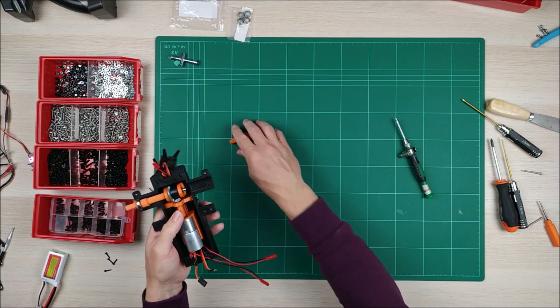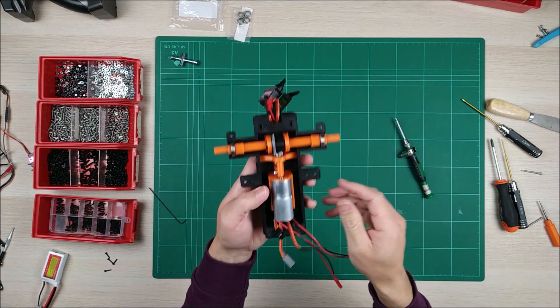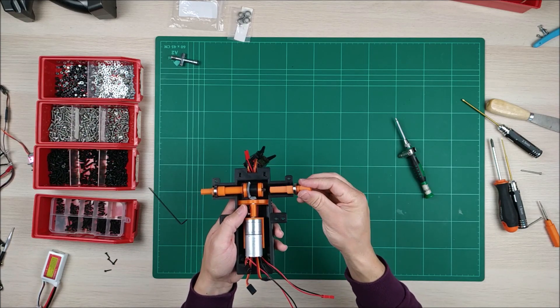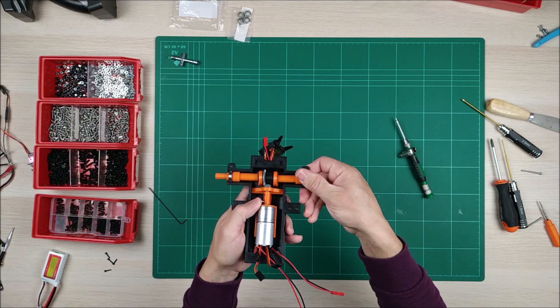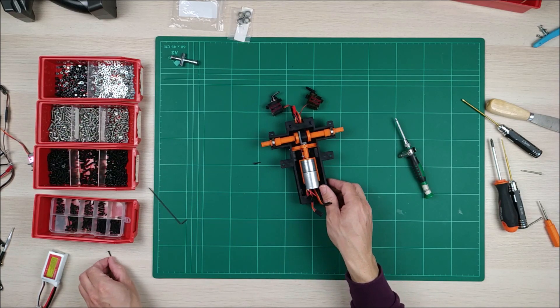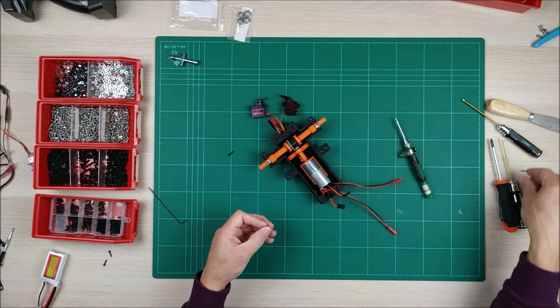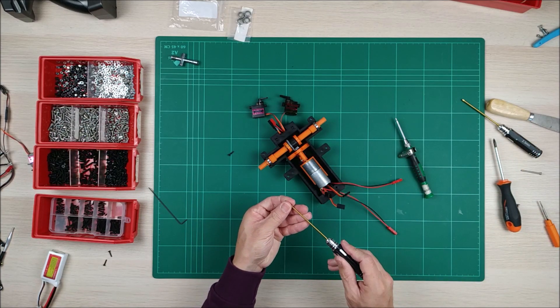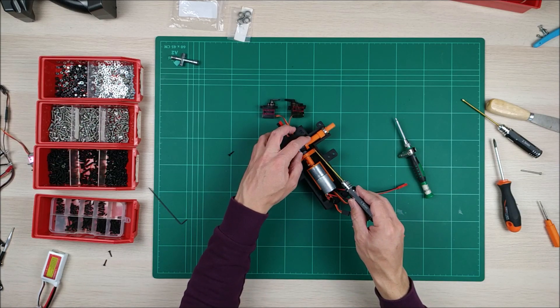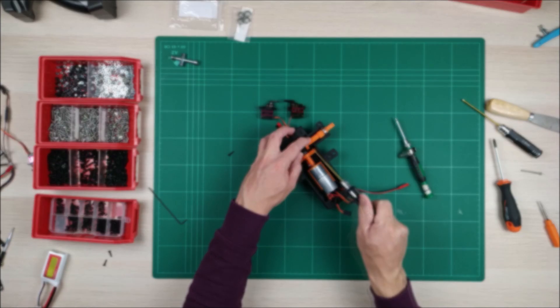Now we're going to insert it here just like that. And this one just like that. And we're going to need to find the hole here, it's going to be like this. And now we're going to use these M2, very small screws, so we can secure these parts.